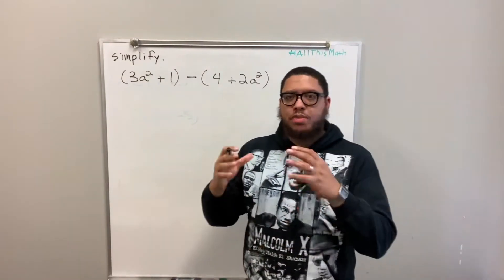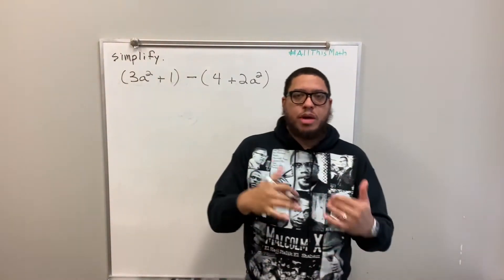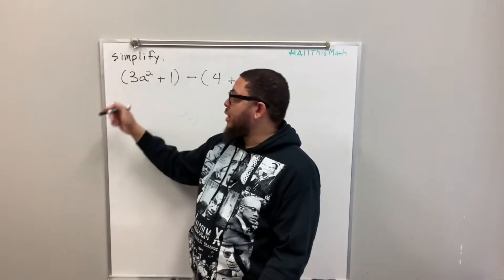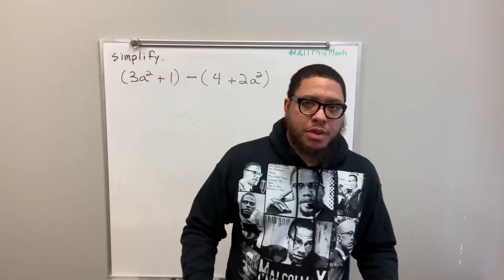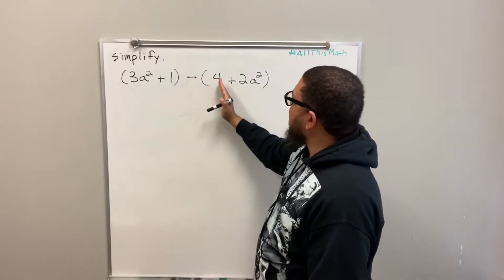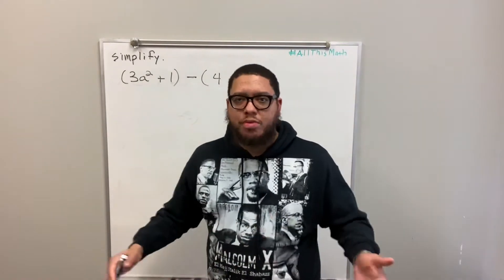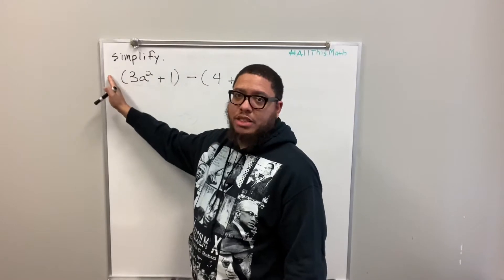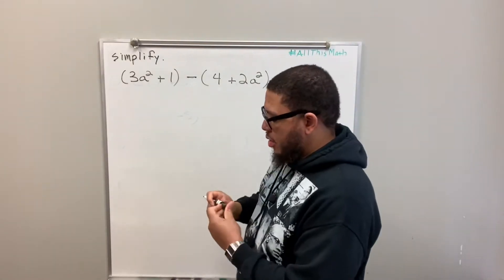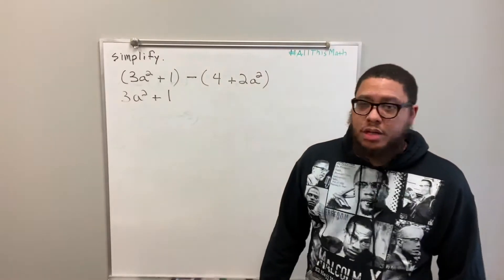Now, you look at the parentheses and say, what sign is in front of you? In front of this set of parentheses, there's no sign. When there's no sign, we recognize that as being positive. So we say there's an invisible plus sign in front. Just like this 3 has no sign in front of it — that means it's positive. Because there's an invisible plus sign in front of the 3a squared plus 1 quantity, all we got to do is just drop the parentheses. So when it's positive or when there's an invisible positive sign, we just drop the parentheses. So you just rewrite 3a squared plus 1 just like that.